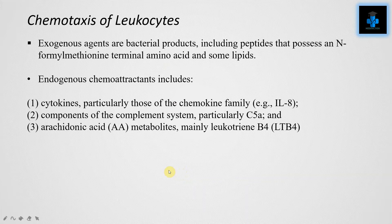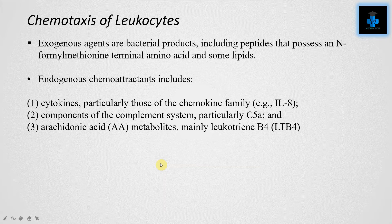Next is chemotaxis of leukocytes. There are broadly exogenous and endogenous types. Exogenous agents include bacterial products, including peptides that possess an N-formyl methionine terminal amino acid, and some lipids. Endogenous chemoattractants include cytokines — particularly the chemokine family, with interleukin-8 as one example — components of the complement system, particularly C5a, and arachidonic acid metabolites, mainly leukotriene B4.